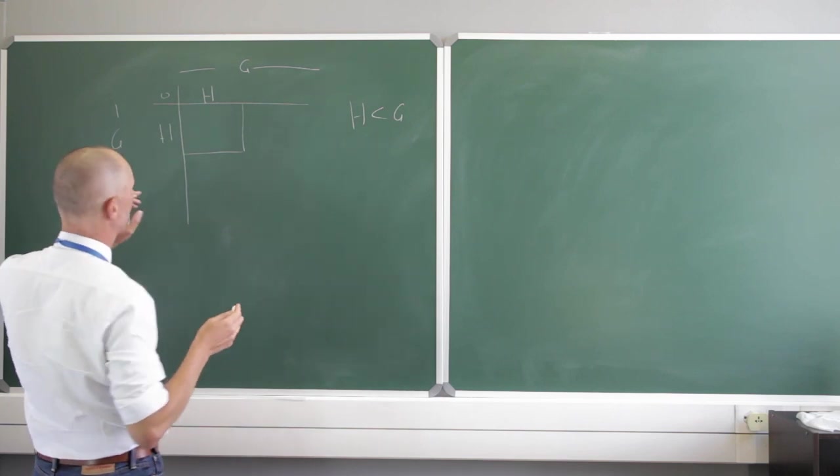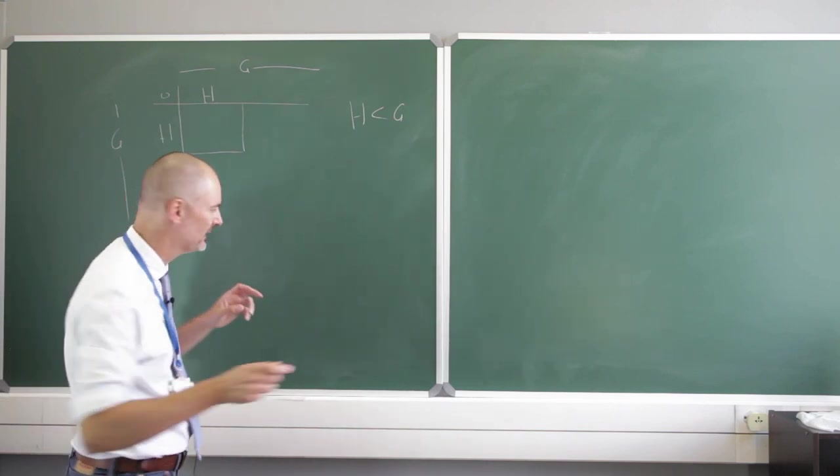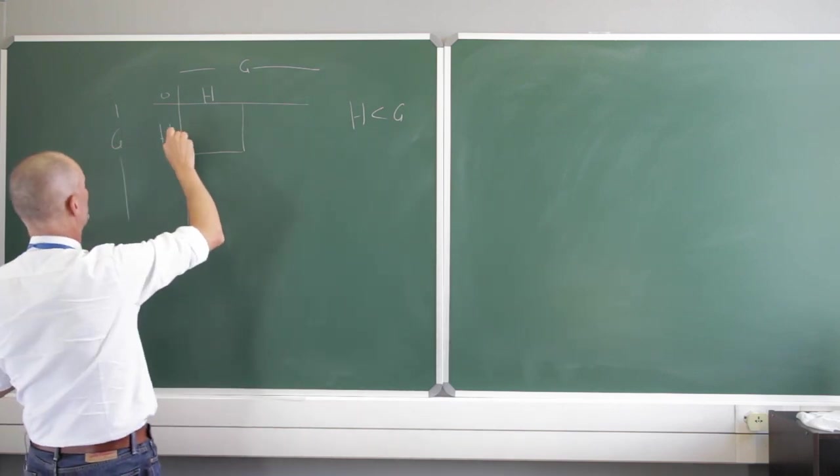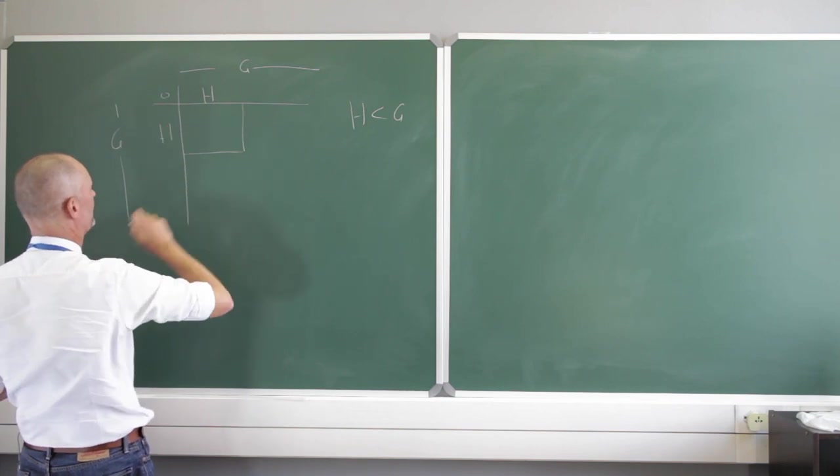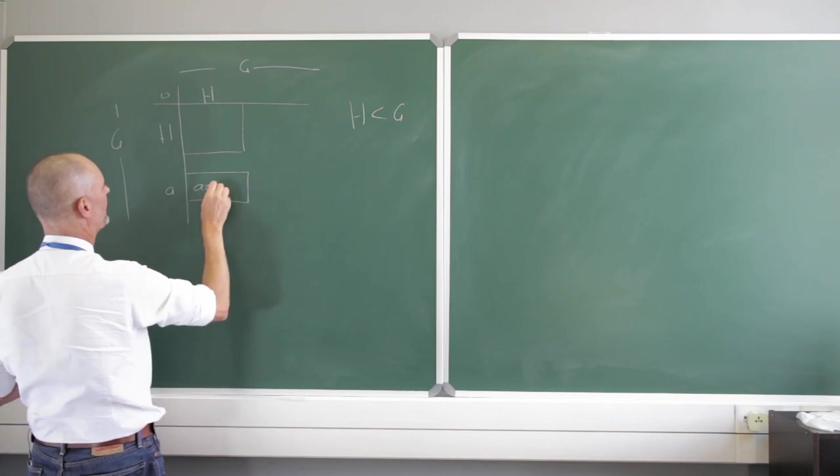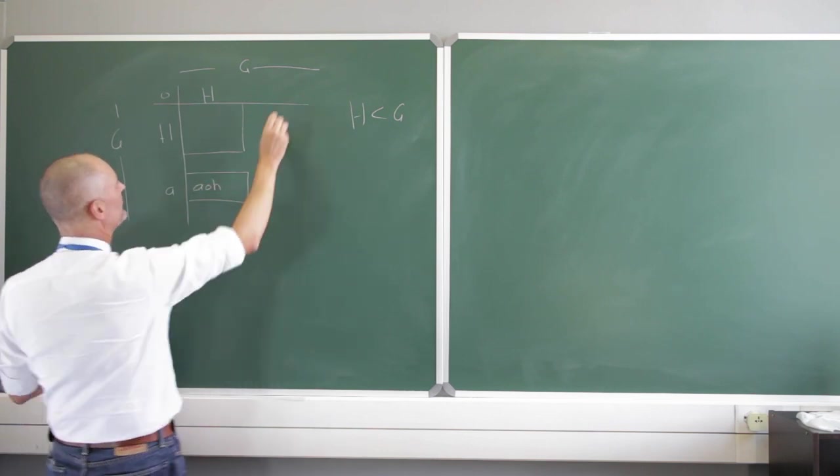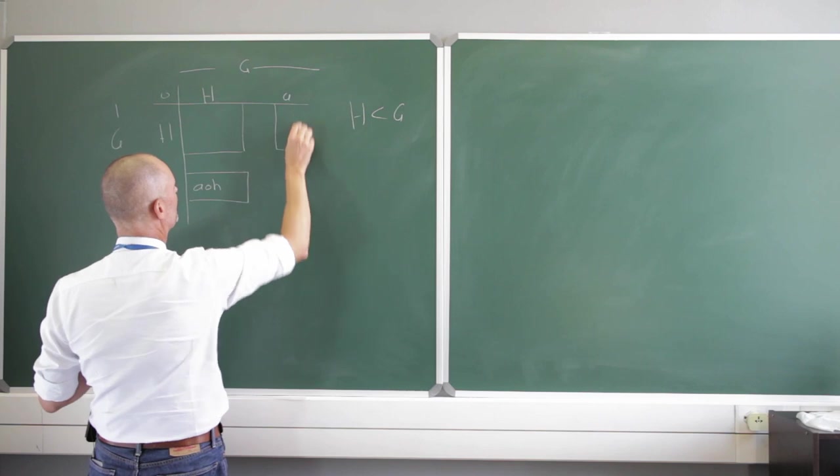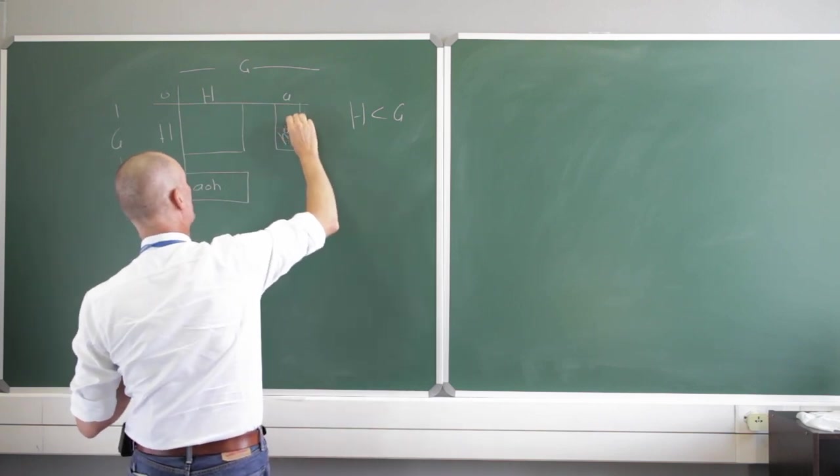And we had instances where A was one of the elements of H and A was not an element of H. Let's choose that. So if that was A, we generated this whole left coset. If that was A, we generated this whole right coset.